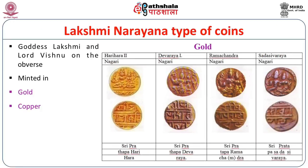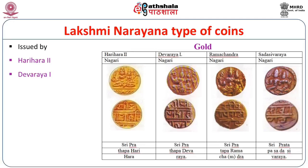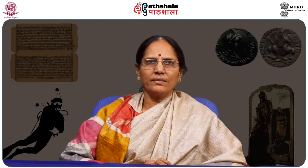Another important coin type is the Lakshmi Narayana type. The goddess Lakshmi and Lord Vishnu are seen on the upper side, and they were minted in gold and copper — no silver Lakshmi Narayana coins have been found. These coins were issued by Harihara II, Devaraya I, Ramachandra, Sada Sivaraya, and Vangadipatharaya II. On these coins, the goddess Lakshmi is depicted seated and the legend is found in Nagari script. The Lakshmi Narayana copper coin of Vangadipatharaya II is also notable.